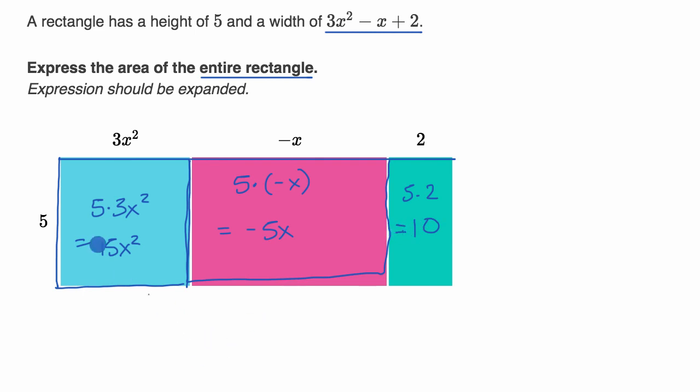So what we just saw is that the area of the whole thing is equal to the sum of these areas, and the sum of those areas is 15x² plus negative 5x, or we could just write that as minus 5x, and then we have plus 10.